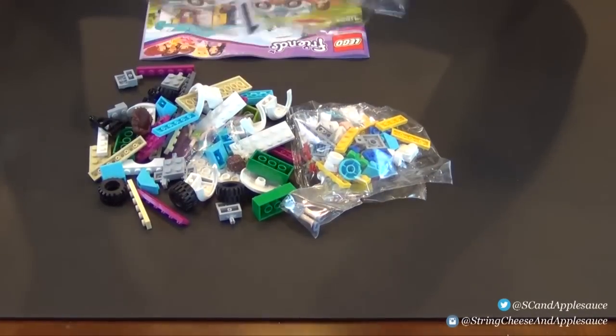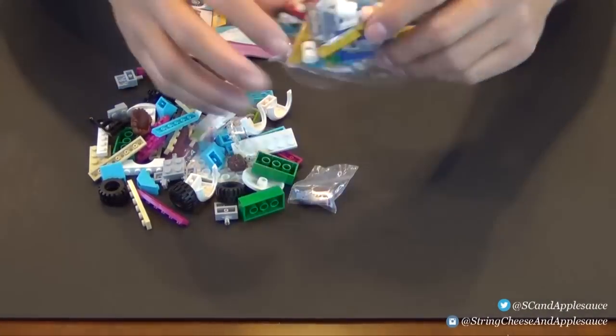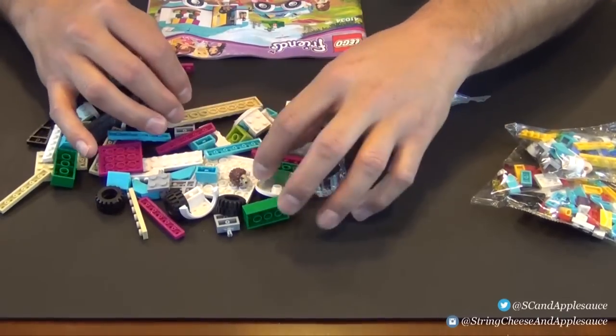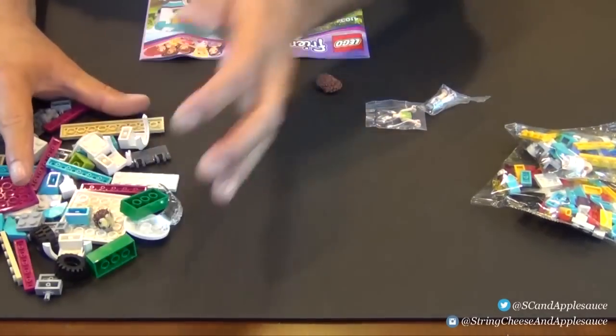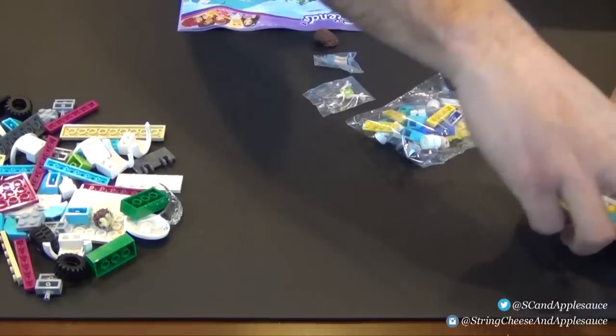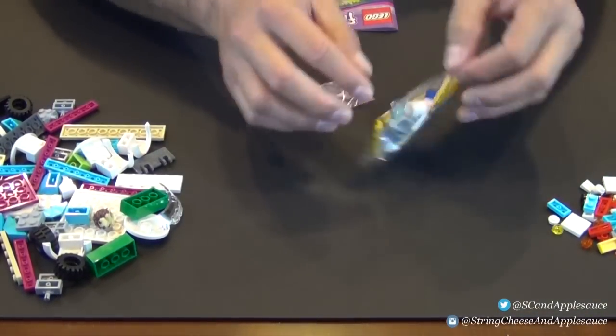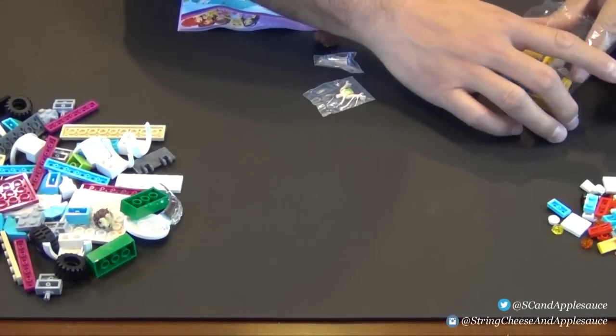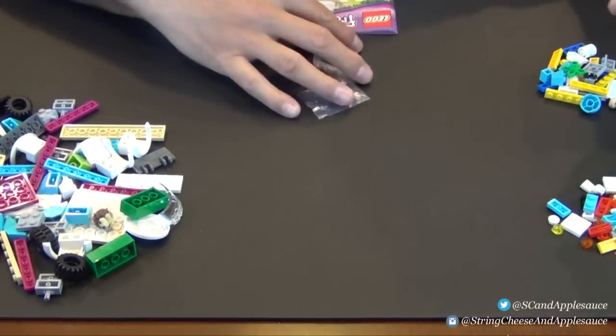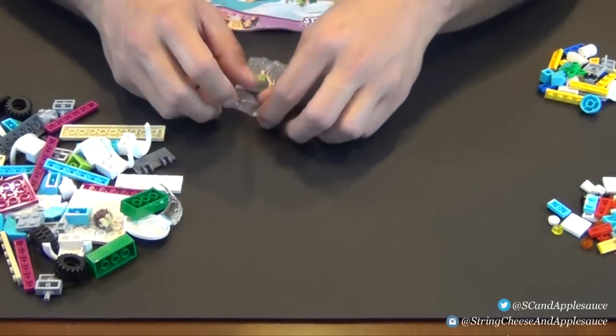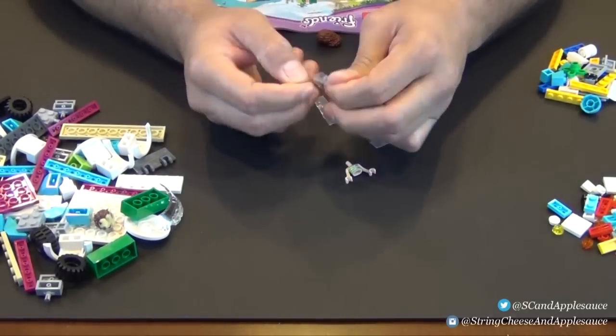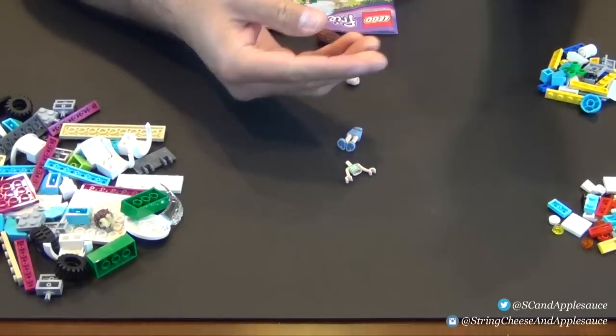We will start with bag number one. It makes most sense to start with the first bag. Two small bags inside bag one and we also have some bags that have the minifigure pieces. Let's open up the two small bags. I'll keep them piled up in their own piles based on the bag that they came in.